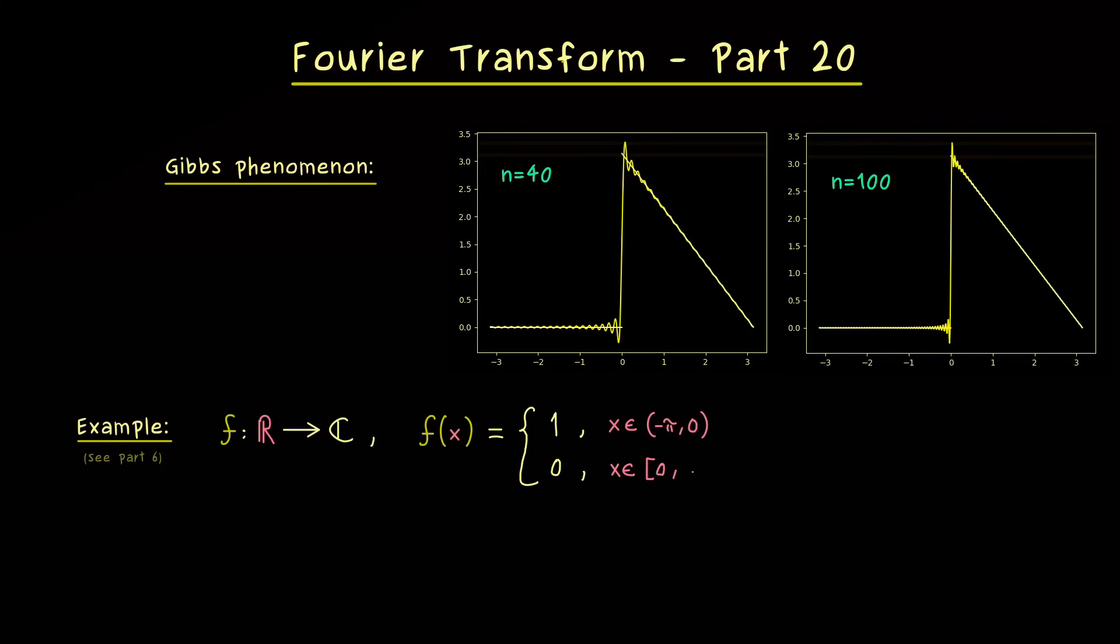We define this function in such a way that it goes from 1 to 0 there. And as always, defining the function from minus π to π is enough because we extend it to π-periodically. From the pictures above we already expect that the Fourier approximation does something like that at the origin.